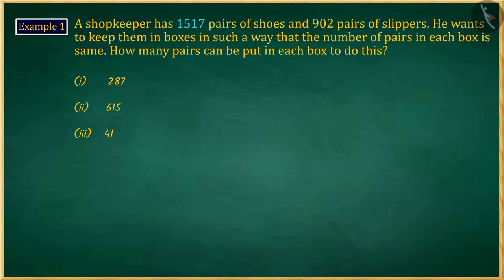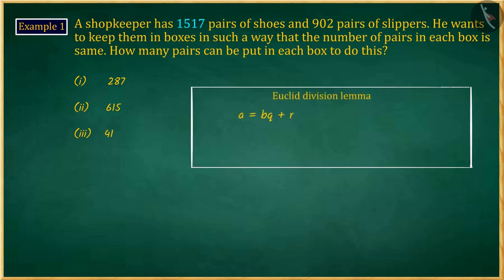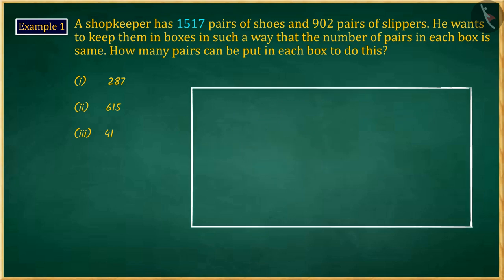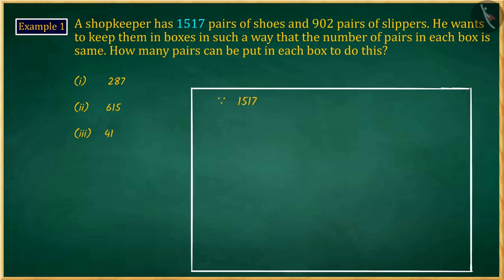Since we have to find the equal number of pairs of both types of footwear that can be kept in the box, we need to find the HCF of both, and for this we use Euclid's division lemma. Here 1517 is greater than 902, so we substitute the values of A and B and solve.